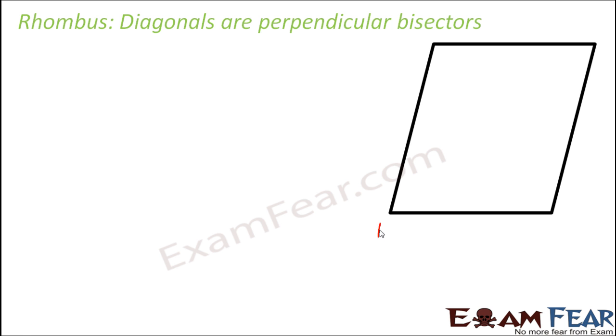For that we have considered this rhombus ABCD. Let's draw the diagonals. Let's consider this point where the diagonals meet as O. So what do we want to prove here? We want to prove that angle DOC is equal to 90 degrees.